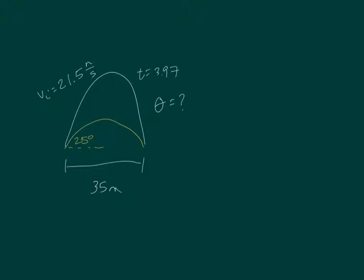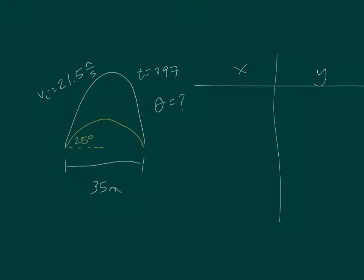To find the actual angle, we need to figure out where theta is contained in our equations. Where does theta come up when we're doing math? When we start setting up the problem and filling in variables like y, vi, and v-bar-x, where does theta play a role?